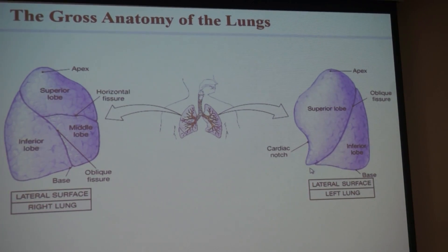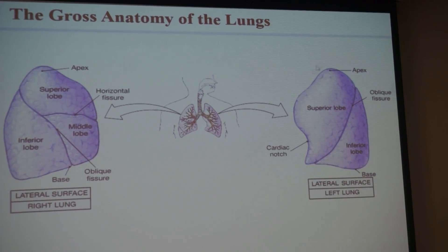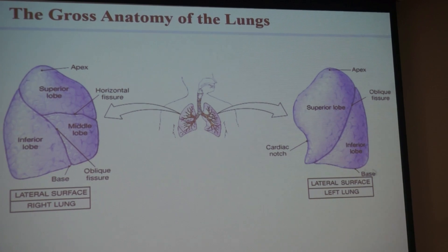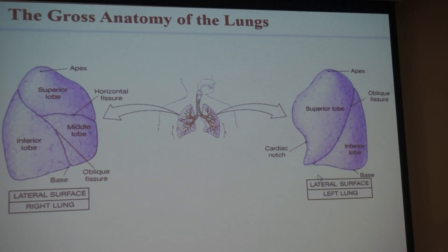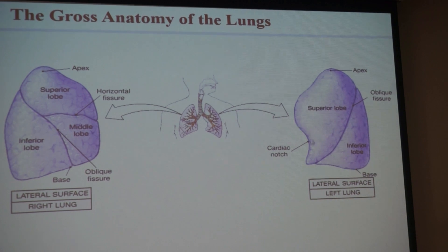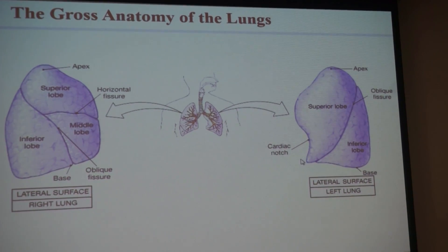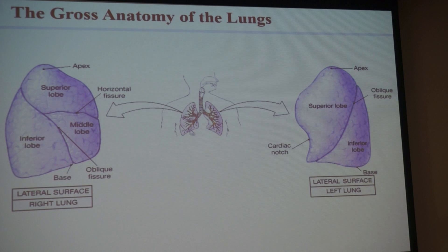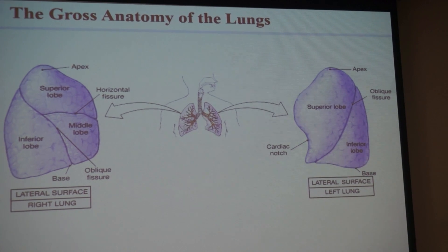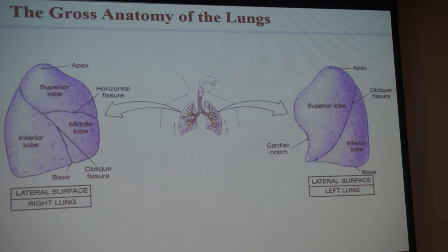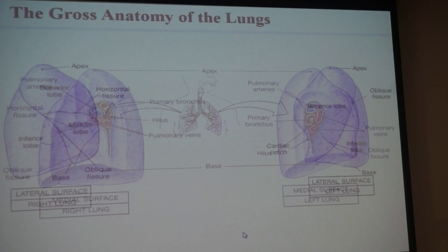The left lung only has two lobes and it has an oblique fissure. Also, when you think about lungs, the apex is up at the top and the base is at the bottom. Notice the left lung has a notch called the cardiac notch — because the heart is sitting in there, so there's a little room for it.